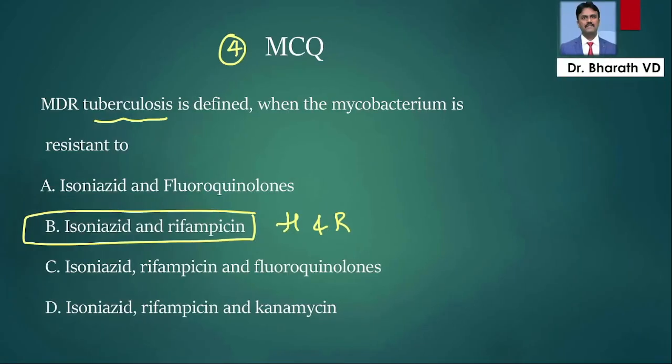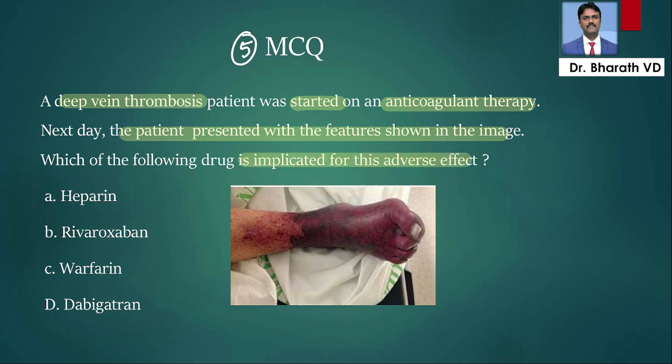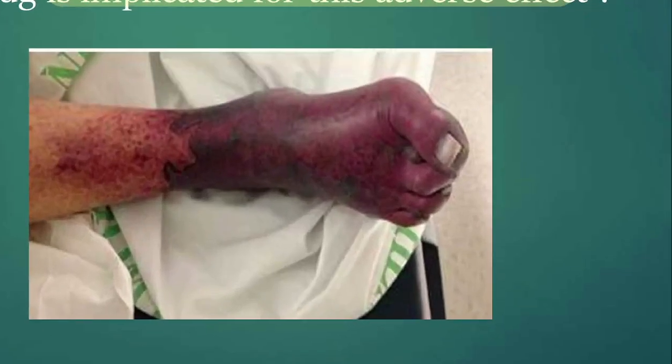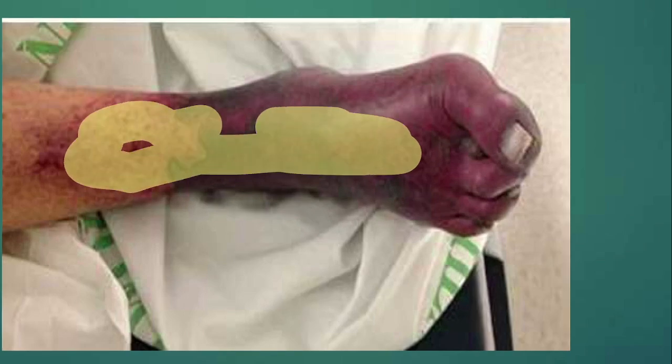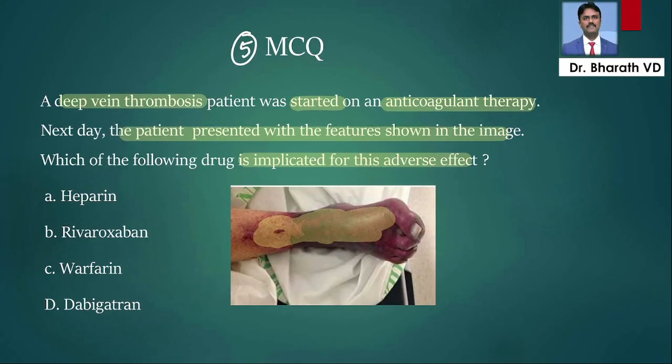The last question, fifth MCQ: a deep vein thrombosis patient was started on an anticoagulant therapy. Next day, patient presented with the features shown in the image. Which of the following drug is implicated for the adverse effect? Let me show the image. You can see the skin has become red, black, necrosed. So this is called dermal necrosis or skin necrosis. This is seen if you start warfarin for deep vein thrombosis. Why does this happen with warfarin? Let us find out.